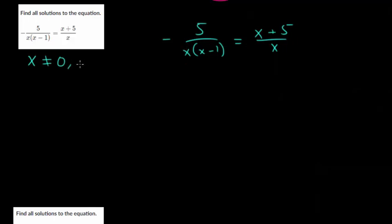For this one, let me rewrite it. We have minus 5 over x times x minus 1 is equal to x plus 5 divided by x. We need to cancel out these denominators, but first, let's say that x can't be 0 for this one and this one, and x can't be positive 1. These are the values outside of our domain.